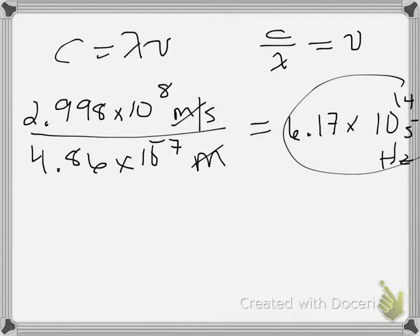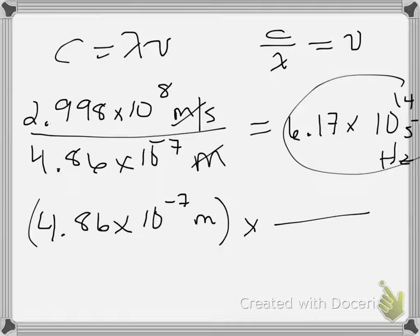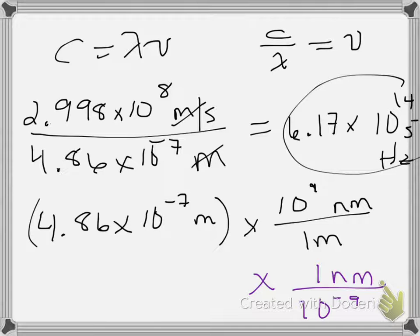So the meters cancel, we're left with inverse seconds, which is the same thing as a hertz. Put that in the calculator and it says 6.17 times 10 to the 14. You can write seconds inverse or you can write hertz. To figure out what color of light this is, it tells us it's in the visible spectrum because outside the visible spectrum doesn't have color. So that means I want to convert it from meters to nanometers. That's usually the unit that we typically use. I'm gonna convert it to nanometers. So nano means small, so I'm gonna have a lot of small things in the big thing. If I'm trying to get to nanometers, it goes on top and there's gonna be a lot of them, so it's a positive exponent there, not a negative one.